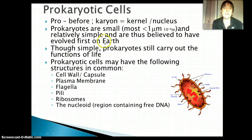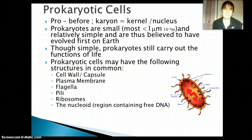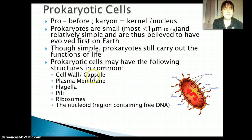All prokaryotes are going to be pretty small — most are smaller than a micrometer. Relatively simple. We do think that they evolved first on Earth. Even though they're simple, they still have all of those functions of life happening, so there still has to be enough inside of them to allow for those things. For that reason, there are some structures that all prokaryotic cells are going to have.